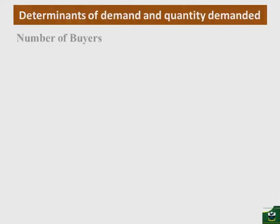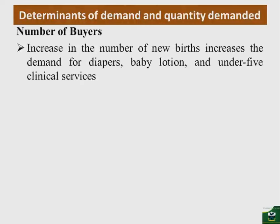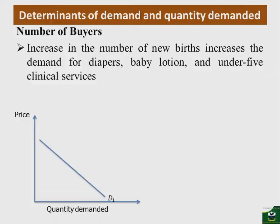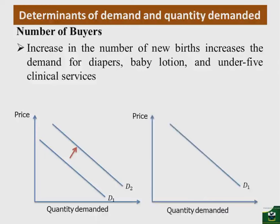The number of buyers is the final determinant. If there is an increase in newborns, for example, the number of buyers — the mothers — increases, so demand for diapers, baby lotion, and under-five clinic services rises and the demand curve shifts right. A decrease in the number of buyers causes the demand curve to shift down and to the left.